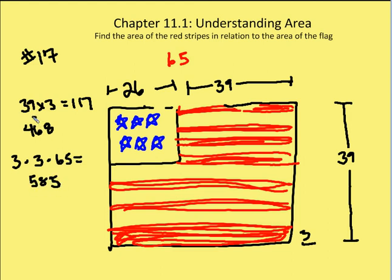So if we add 468 to 585 units squared, we get a total area for the red stripes of 1,053 units squared.